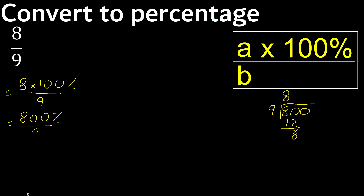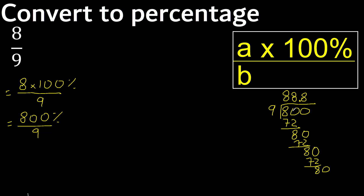Subtract, then bring down the next digit. There is no number, therefore complete — always complete with 0 — here with a decimal point. 9 x 8. Subtract, complete, multiply by 8.